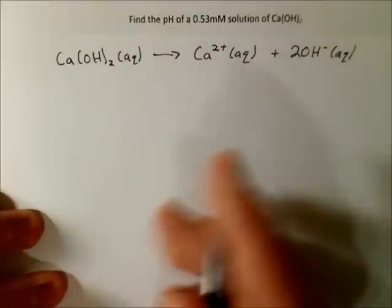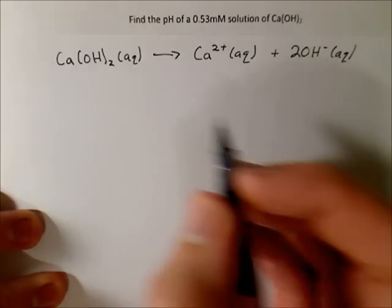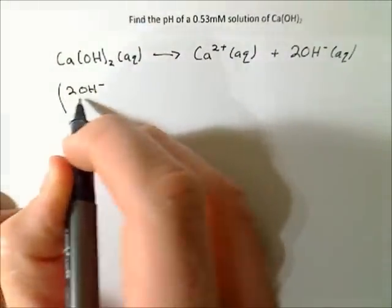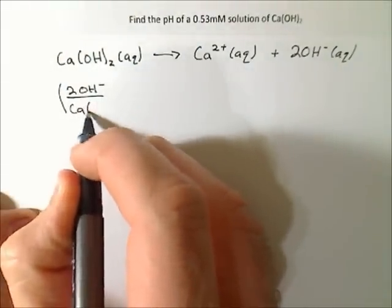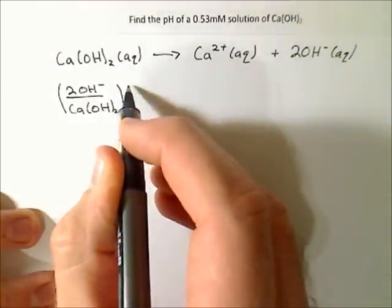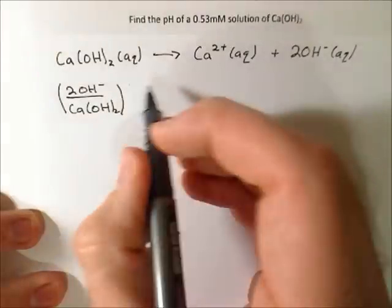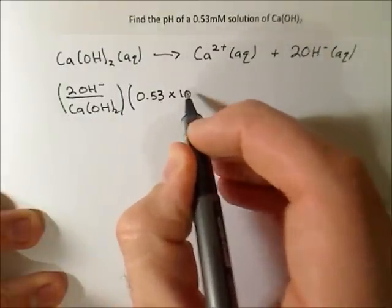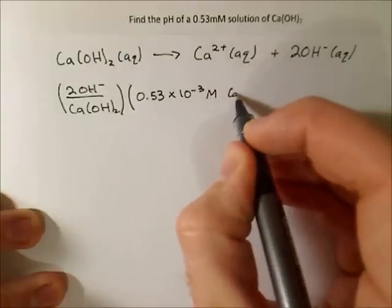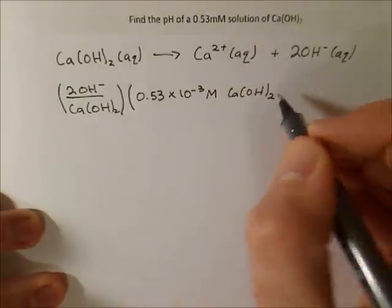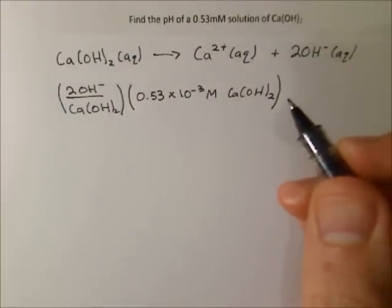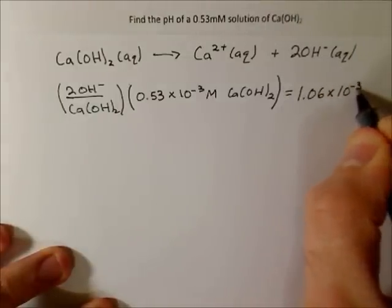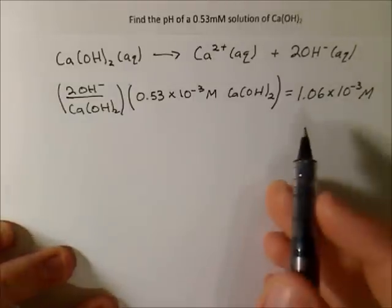So now in this case, we're interested in the concentration of hydroxide per however many calcium hydroxides we have. So our ratio is 2 OH- per 1 calcium hydroxide. And then we're told that we have a 0.53 millimolar solution. So we always convert that to molar, so that's times 10^-3. And we should get 1.06 × 10^-3 molar. And that's our concentration of hydroxide.